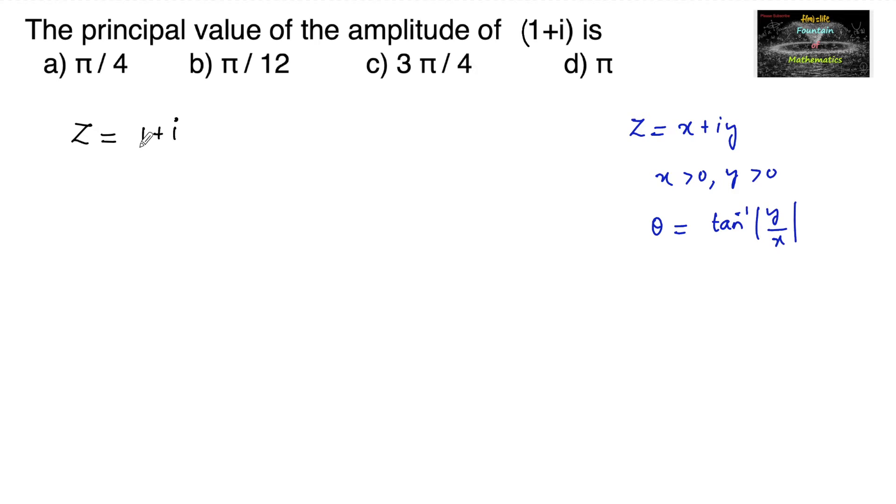Here x = 1, y = 1, both are positive. So the principal value of amplitude of complex number z equals tan^(-1)(y/x) = tan^(-1)(1/1) = tan^(-1)(1).